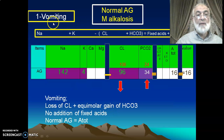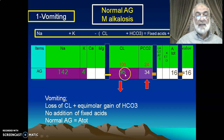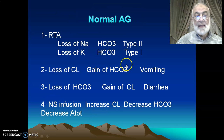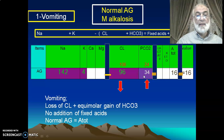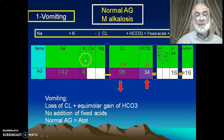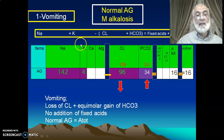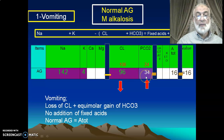In vomiting, there is loss of chloride. Instead of being 106, there is loss of chloride, but at the same time there is gain of bicarbonate in an equimolar fashion. If I lost 10 milliequivalents of chloride, I gain 10 milliequivalents of bicarbonate. So the difference between sodium and chloride plus bicarbonate remains the same — no change in the anion gap. In vomiting, there will be loss of chloride: this is hypochloremic metabolic alkalosis, with chloride decreased and bicarbonate increased.